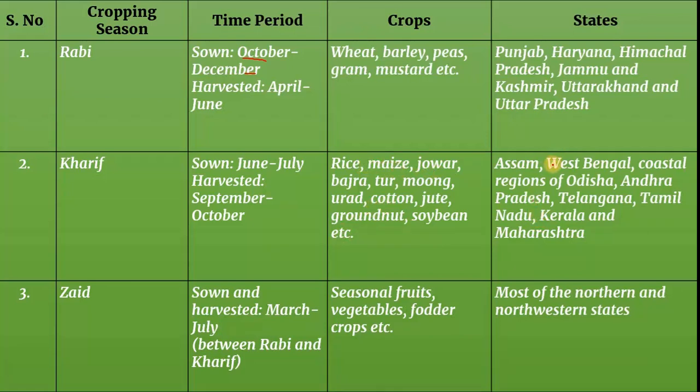Kharif crops are grown in states like Assam, West Bengal, coastal regions of Odisha, Andhra Pradesh, Telangana, Tamil Nadu, Kerala and Maharashtra. The Zaid season falls between the Rabi and Kharif seasons.